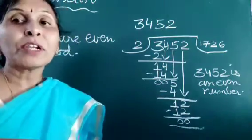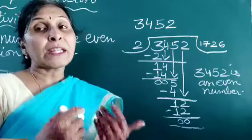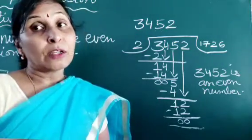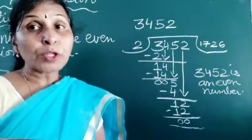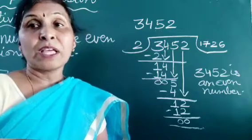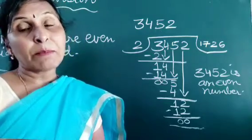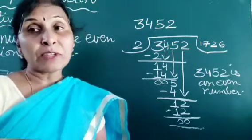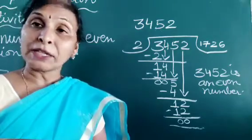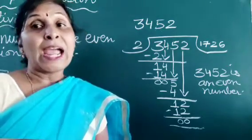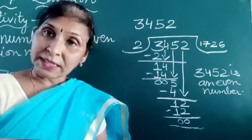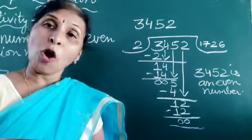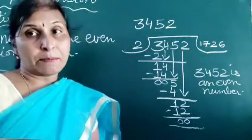Now it is clear: when we divide a number by 2 and no remainder is left, then that number is an even number. If when we divide a number by 2 and some remainder is left, then that number is an odd number.